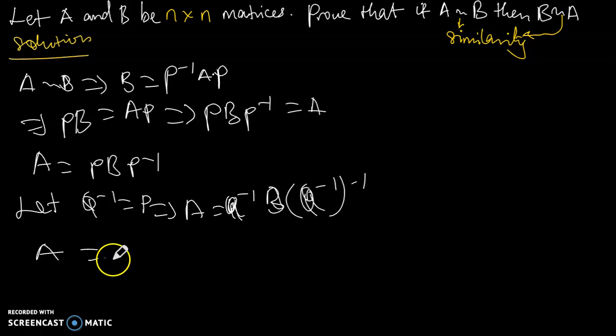So A, in this case, will be equal to Q inverse of BQ, and then we can conclude by saying that B is indeed similar to A.